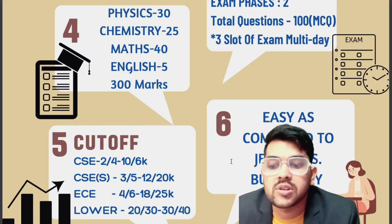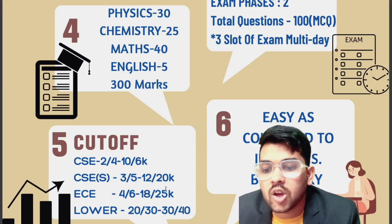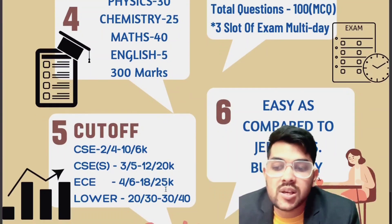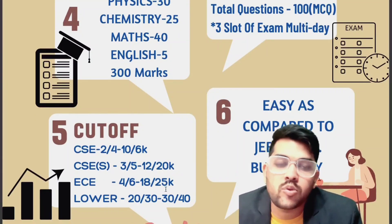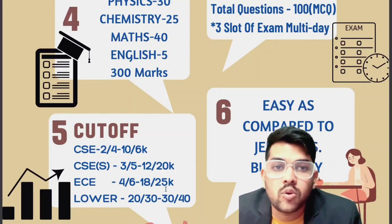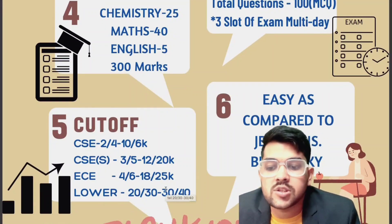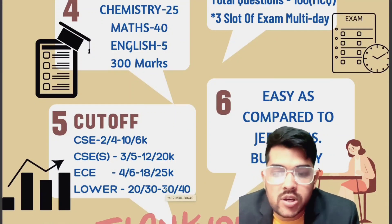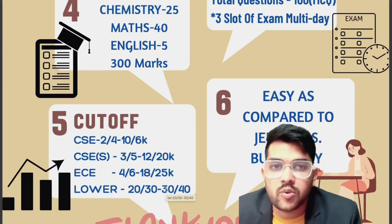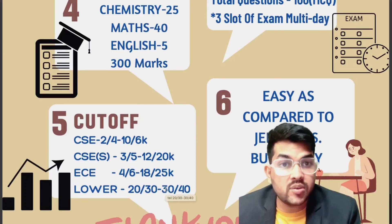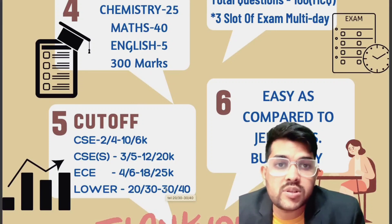For homestate students in CSE, the cutoff range is 4,000 to 16,000. For CSE specialization, it is 3,000 to 12,000 for other state and 5,000 to 20,000 for homestate. For EC branch, it is 4,000 to 18,000 for other state and 6,000 to 25,000 for homestate. For lower branches, it ranges from 20,000 to 30,000 for other state and 30,000 to 40,000 for homestate.